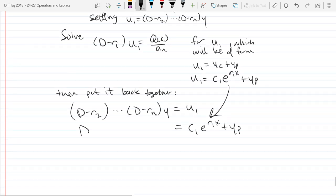So when you put it back together, (D minus r2), (D minus r3), (D minus rn) y, you're going to let everything except the outermost operator be u2. So this inner part will be u2 equal (D minus r3),